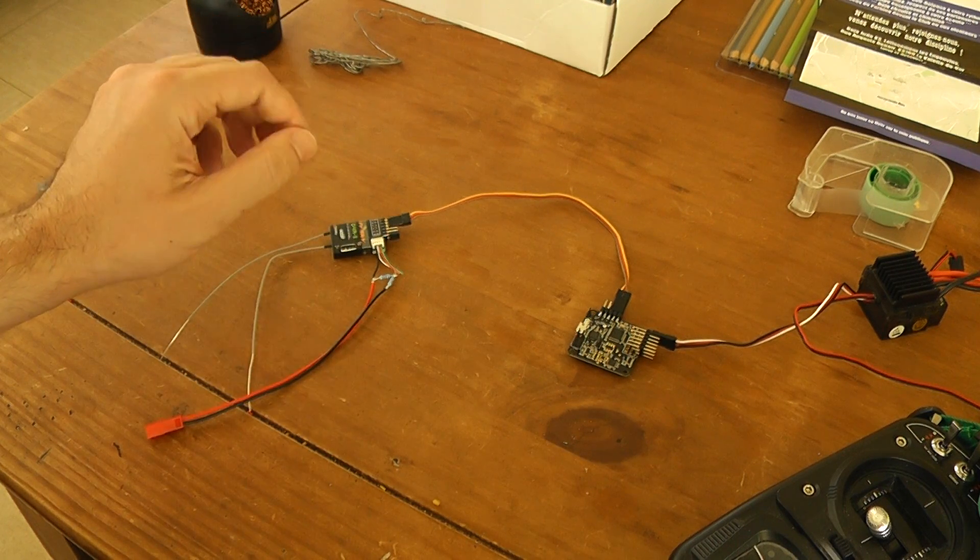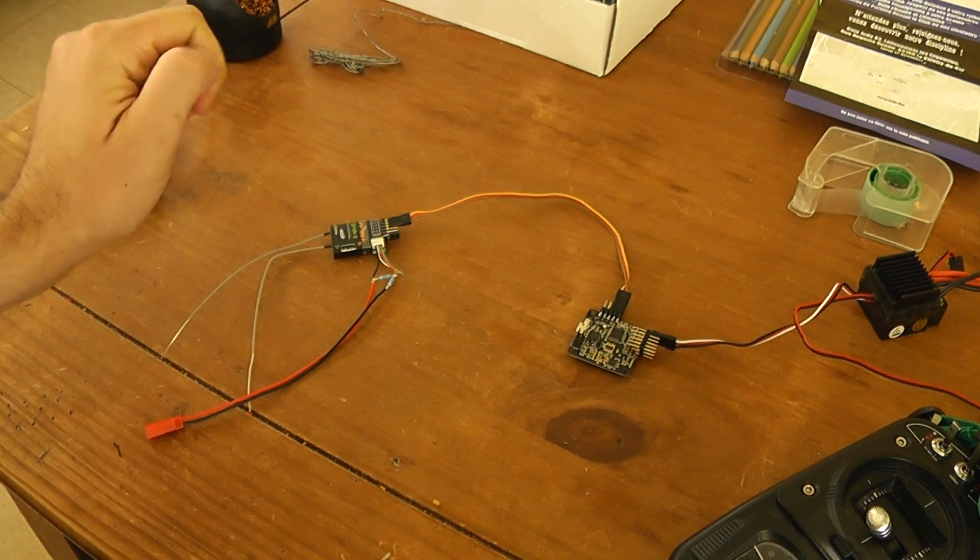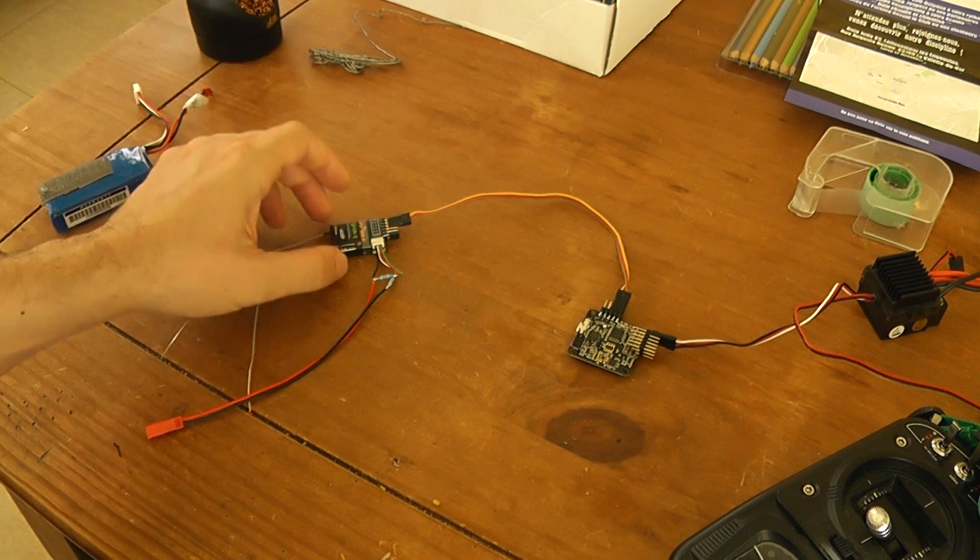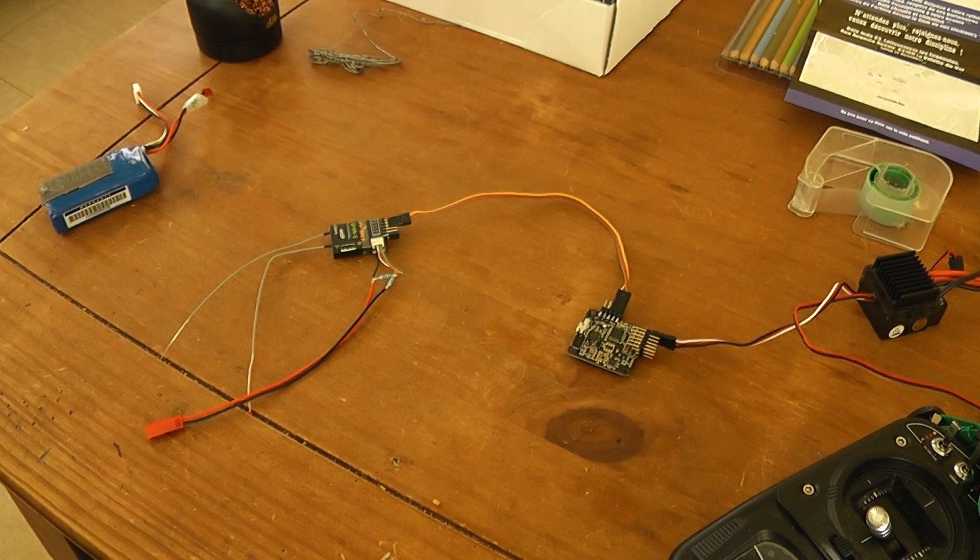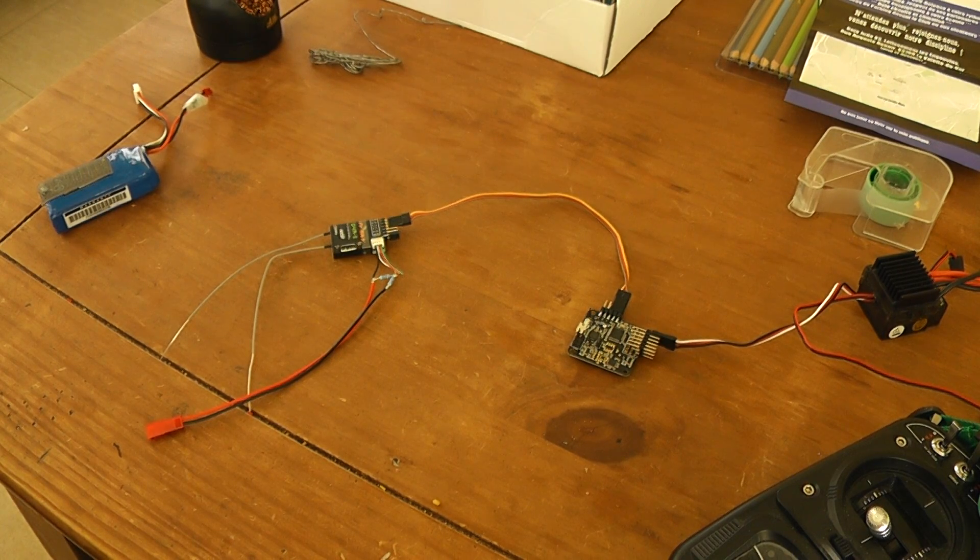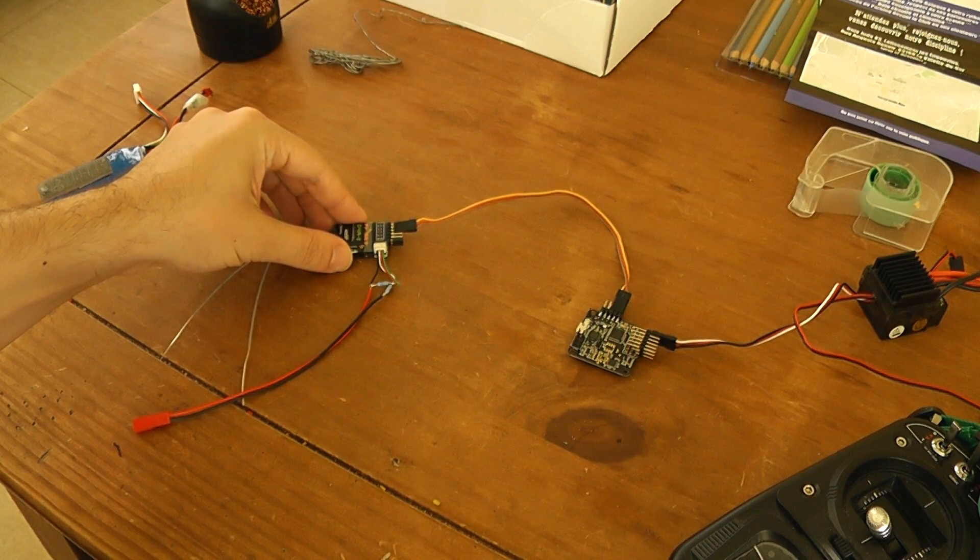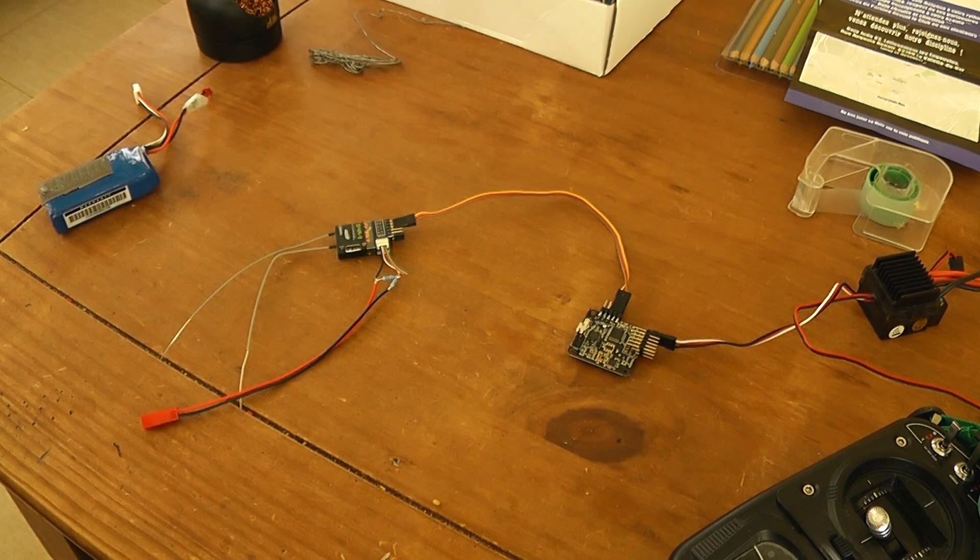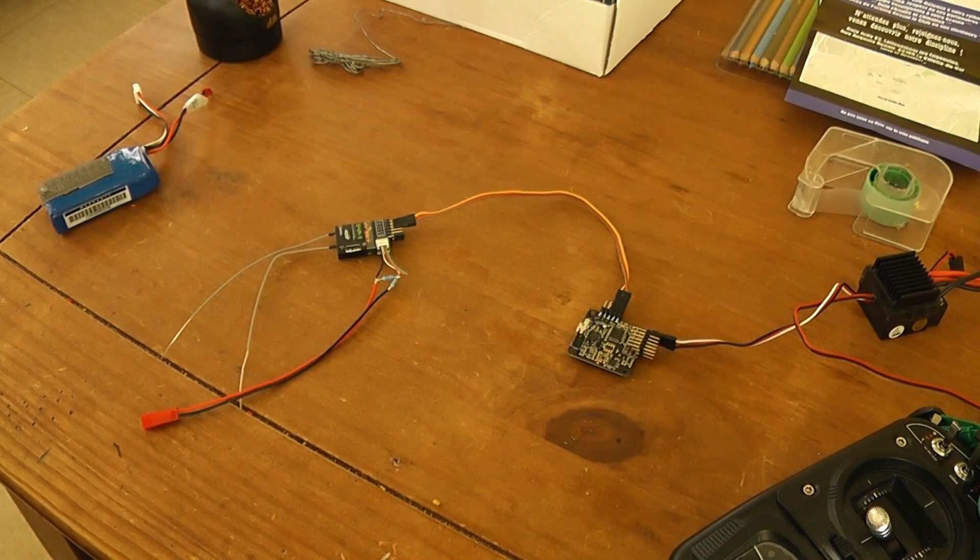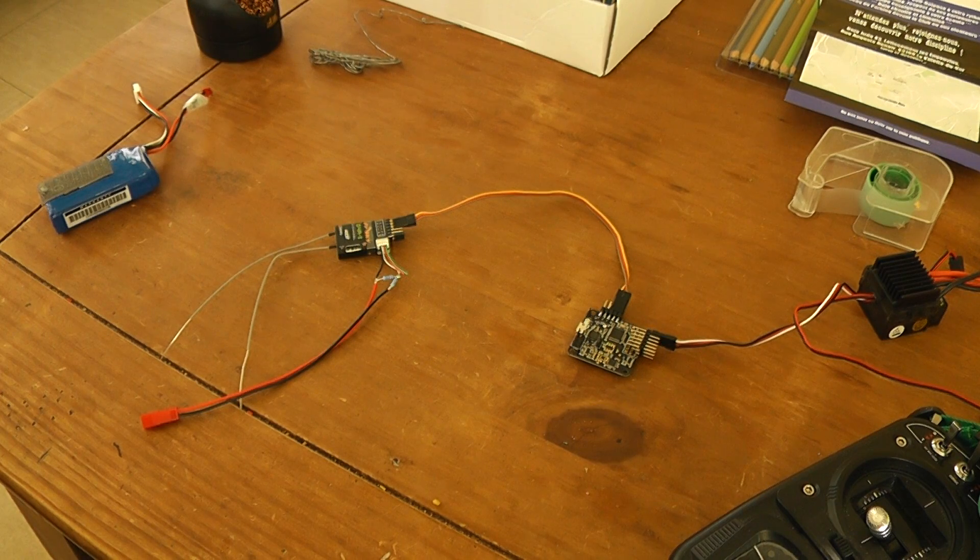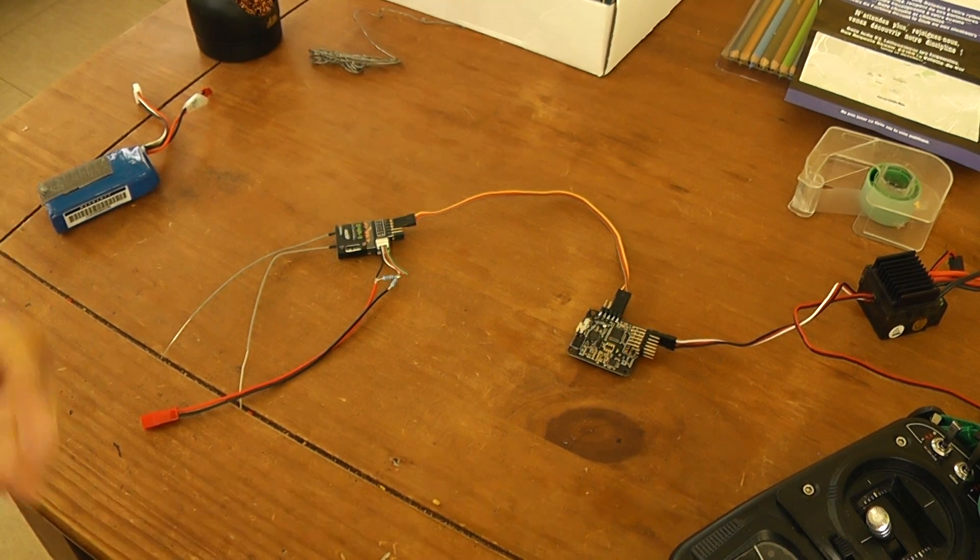I also modified the Deviation transmitter software protocol in order to display the RSSI. As you maybe don't know, the FrSky receiver is outputting dBm values from 110 when you are at very close range and decreasing to about 30 when you are in far range, close to infinity.